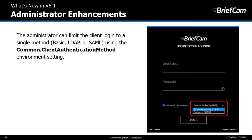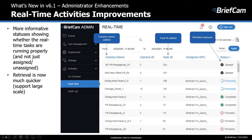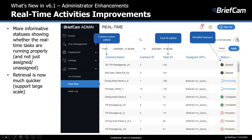Now let's have a look at some of the administrator enhancements. The administrator can now limit the client login to a single method using a new environment setting, which affects what is shown in the sign-in screen. We also made improvements to the real-time activities screen: there are now columns for the camera name and task ID, and the items in the status column include more informative statuses. This enables the administrator to easily see whether real-time tasks are running properly, whereas in the previous version, they could only see whether the task was assigned to a GPU.